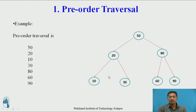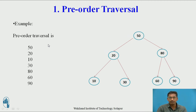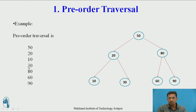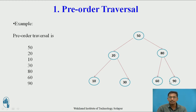In pre-order there are three steps: visit root, traverse left subtree, then traverse right subtree. So first is 50 — the root. Then we traverse the left subtree in pre-order: 20 is the sub-root, so 20 comes next, then its left subtree gives 10, then its right subtree gives 30. Now traversing the right subtree in pre-order: 80 is the sub-root, so 80 comes next, then left subtree gives 60, then right subtree gives 90. So the pre-order traversal is: 50, 20, 10, 30, 80, 60, 90.